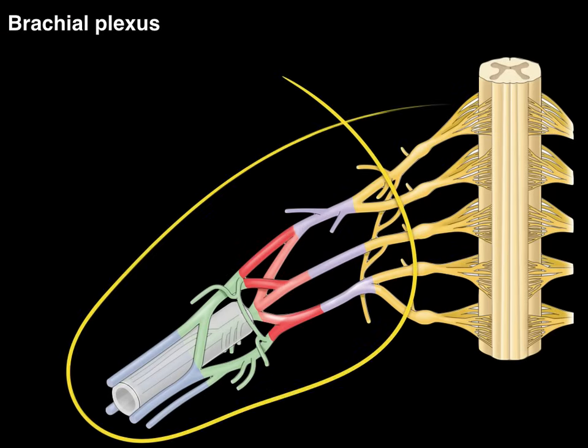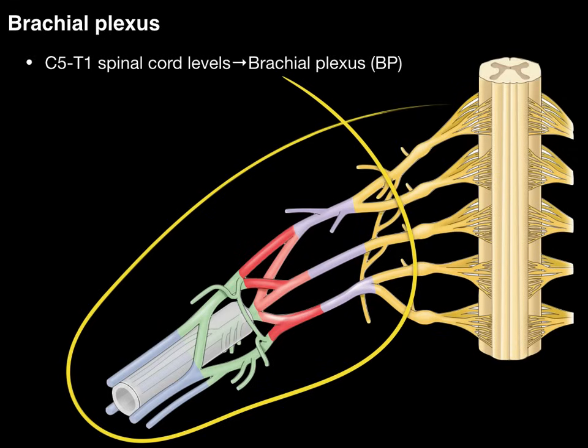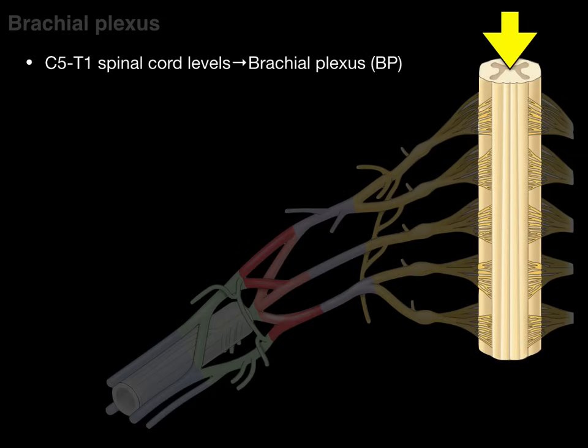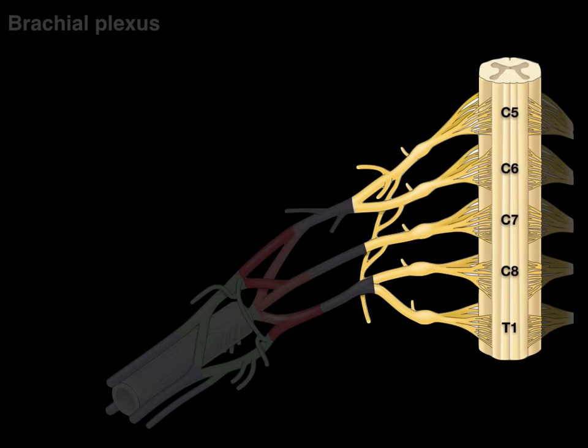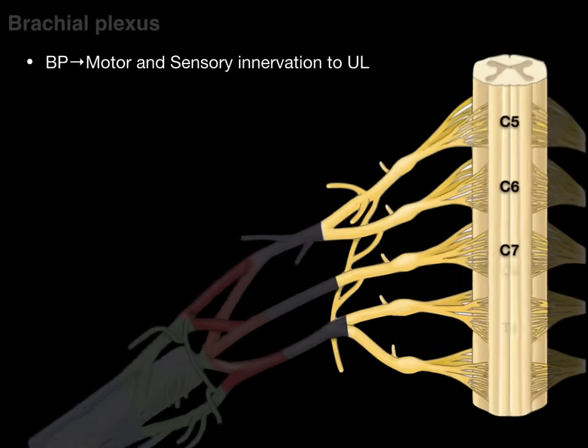The brachial plexus is that right there. The C5 to T1 spinal cord levels are what comprise and make up the brachial plexus — there's our spinal cord and those are the C5 to T1 spinal cord levels. The brachial plexus is what provides the motor and sensory innervation to the upper limb.